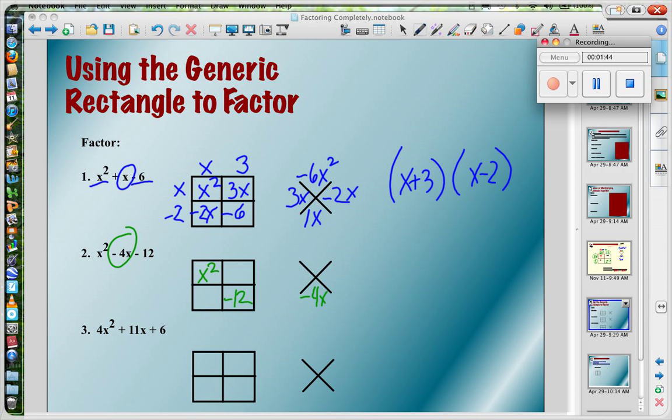My product of the remaining boxes has to be negative 12x squared. So I'm looking for two numbers that I can multiply to get negative 12, add to get negative 4. They're different signs, and I'm thinking negative 6x and positive 2x. Doesn't matter where I put them. So I'm going to put negative 6x up top, 2x at the bottom, and now I'm ready to start factoring.